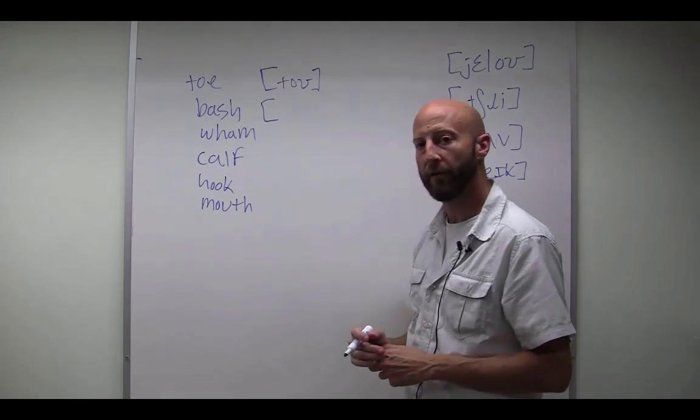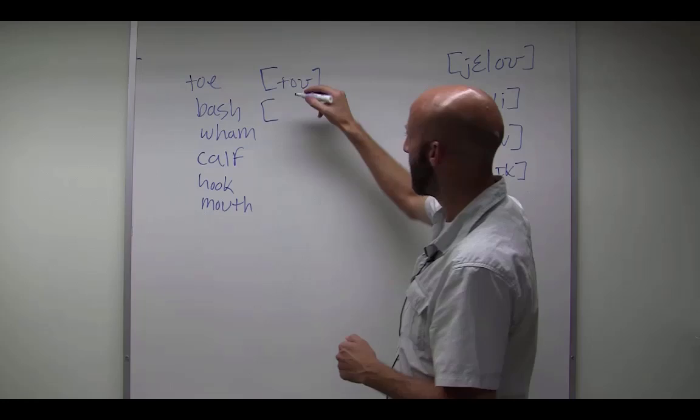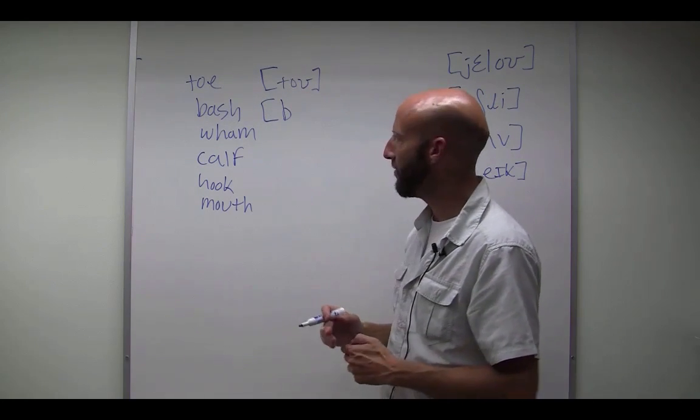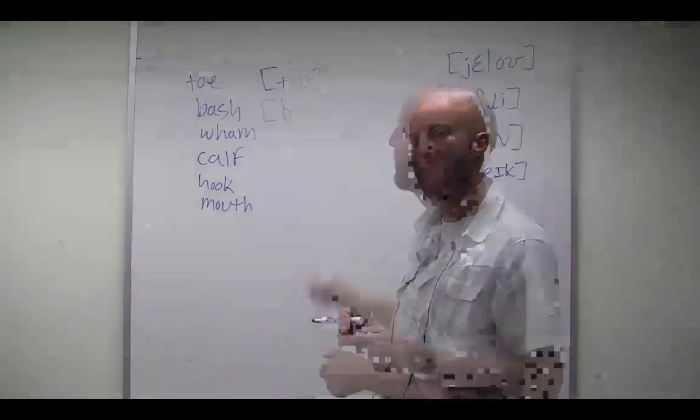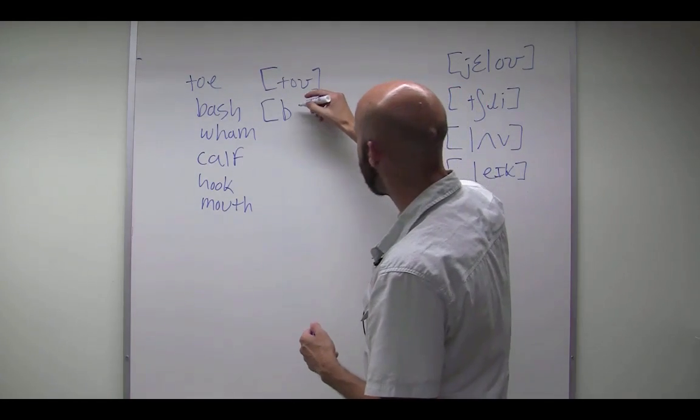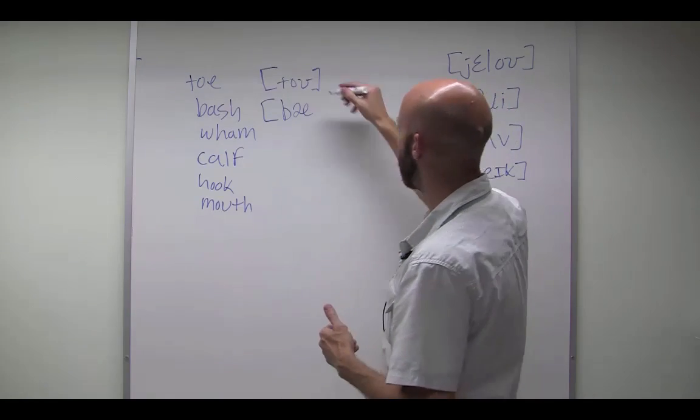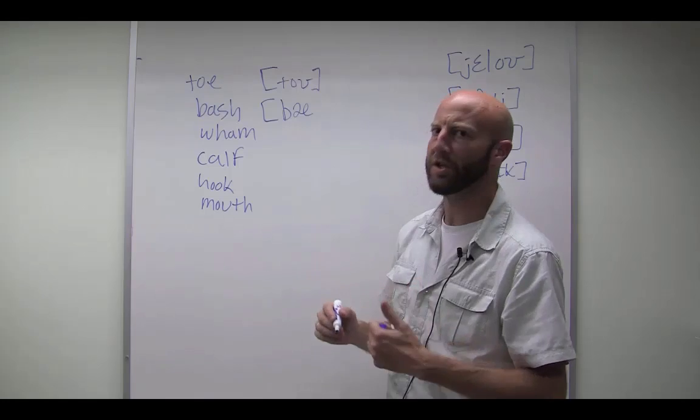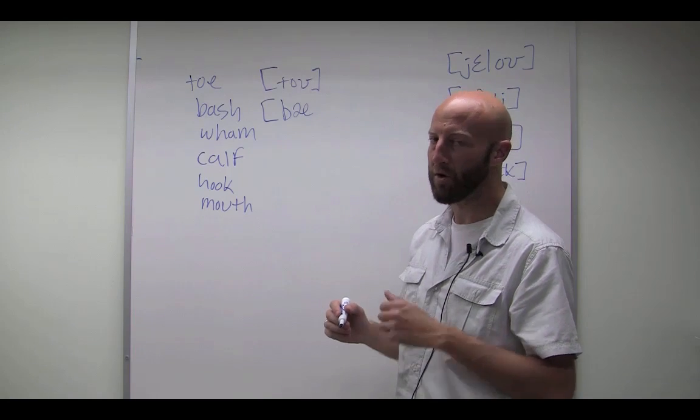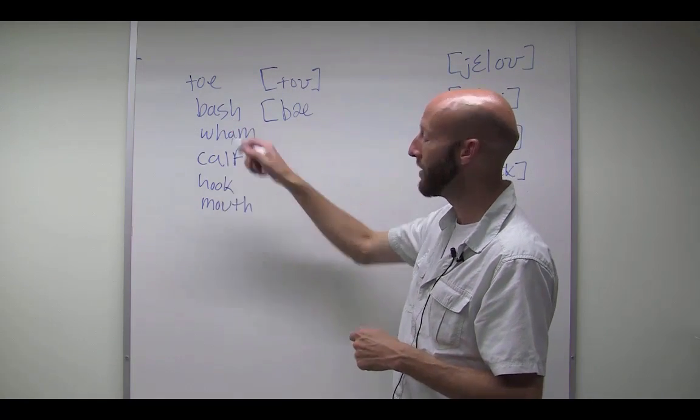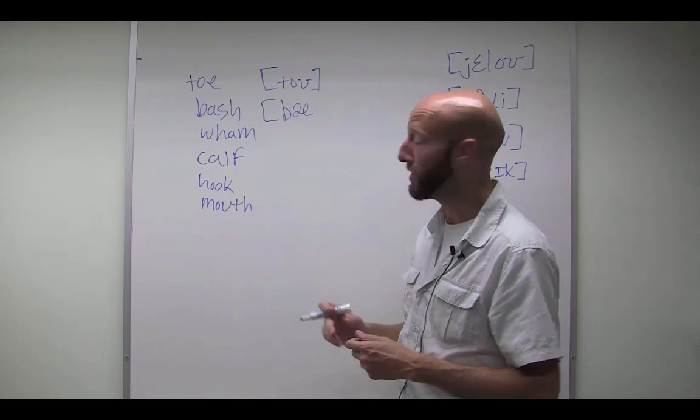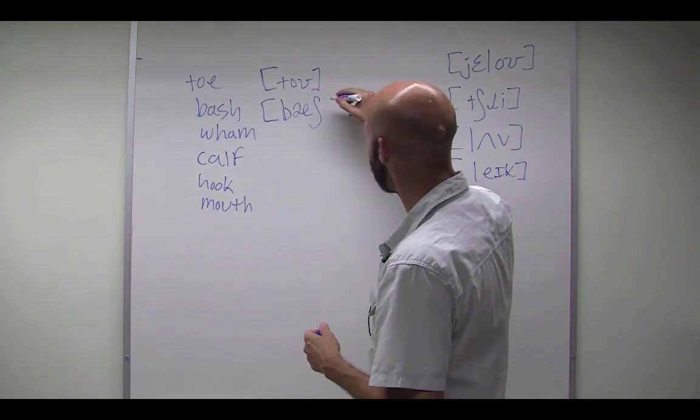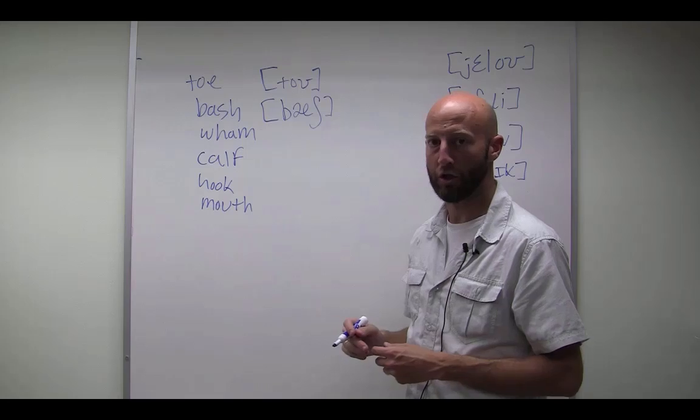What about this next word? Bash. Remember, put the brackets first. Bash. Well, we have a b first and then how do we represent that a sound? With the ash symbol, if you can remember that. But then, we have ba. We have one more sound here, sh. Remember, in English, we tend to write that with two letters. That's not what we do in the IPA system, though. We actually write it with this elongated s. Sh. Bash.